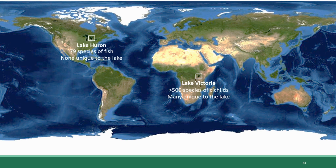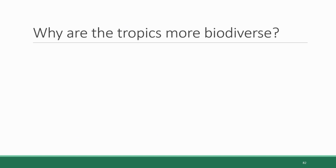What accounts for the difference? One major difference is that the geography of these two lakes relative to the equator is very different. Lake Victoria is literally intersected by the equator, shown here in this yellow line, so it's located in a tropical zone, whereas Lake Huron is located some distance from the equator in a temperate zone. These lakes embody just one example of the general trend: the tropics are more biodiverse, and temperate regions are less biodiverse, especially as you get further north and south.